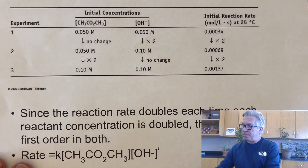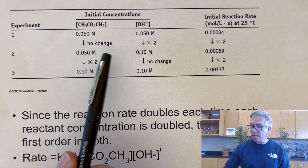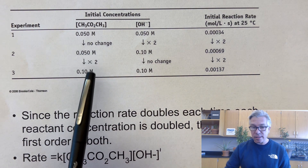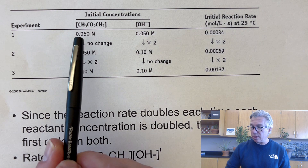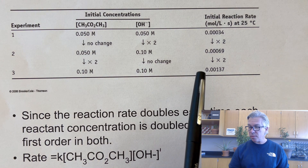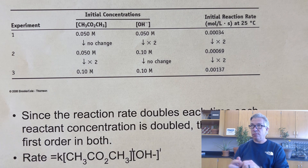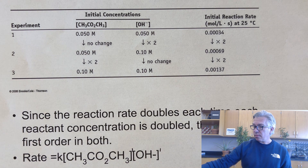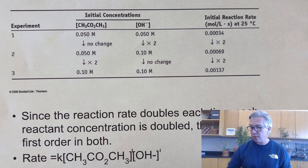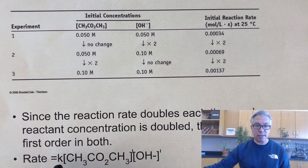Then in a third trial, keeping OH constant and doubling the initial molecule, if the rate doubles again, that means it's first order with respect to both. You run multiple trials and see how the system responds. So this would be first order in the first reactant, first order in OH, and second order overall. Later, we'll talk about finding the rate constant K.